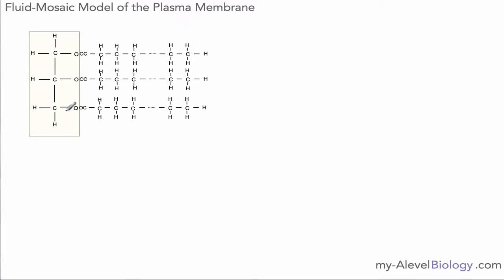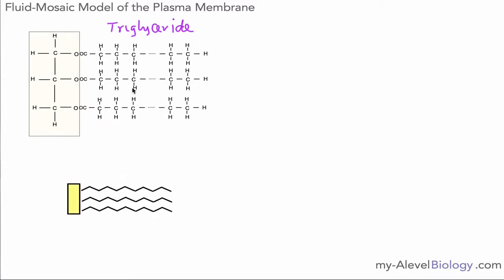You may remember from the previous video that we had something called a triglyceride. It looks quite complicated in this diagram, but if you look back at the other video you'll see it's actually reasonably simple. Our triglyceride consists of a glycerol end of the molecule and three fatty acid chains, and when we draw it more simply we've got the glycerol on one side and three fatty acid chains — because we have three, we call this a triglyceride.